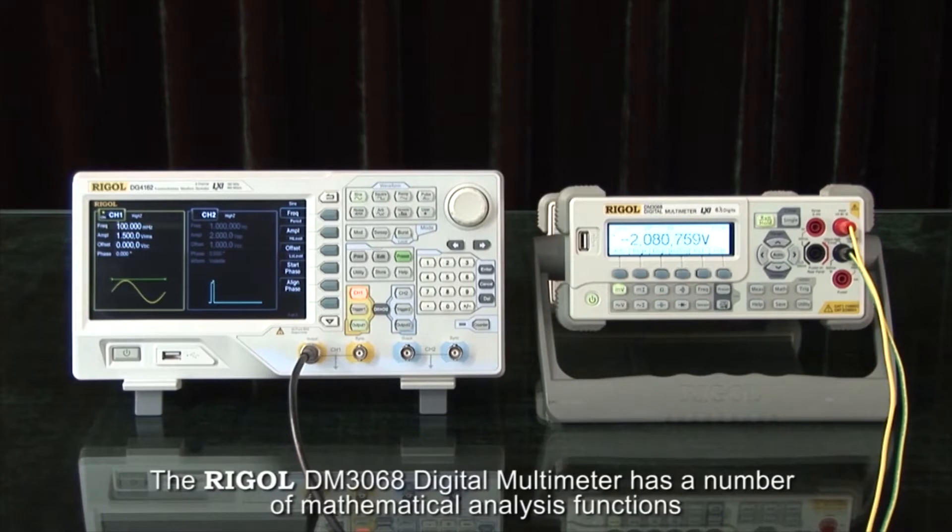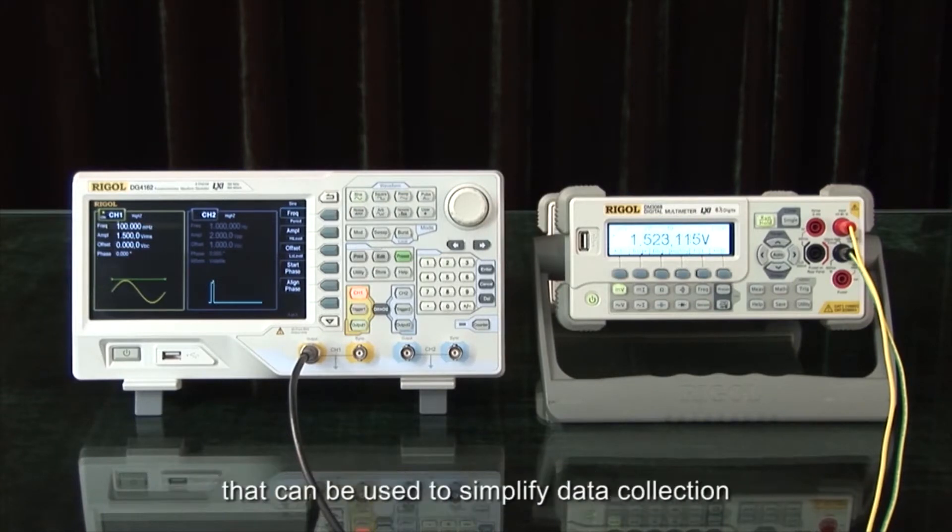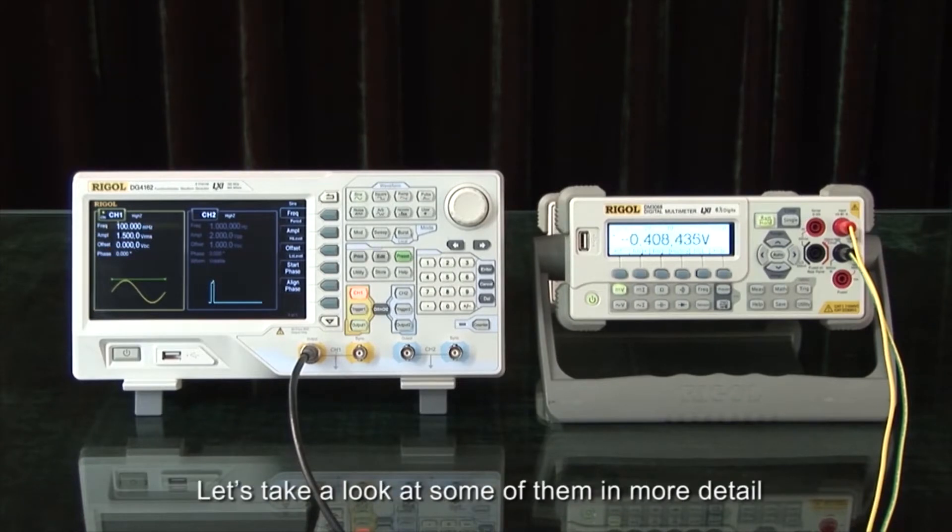The Rigol DM3068 Digital Multimeter has a number of mathematical analysis functions that can be used to simplify data collection. Let's take a look at some of them in more detail.